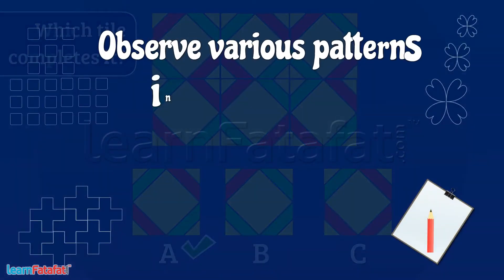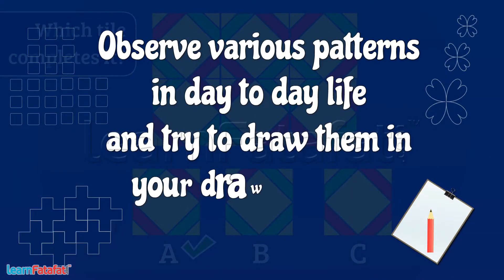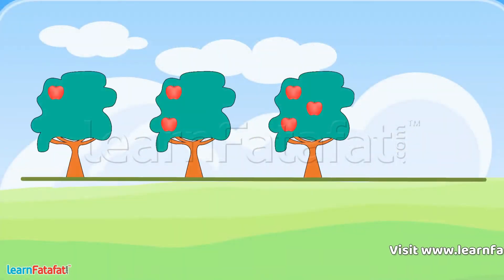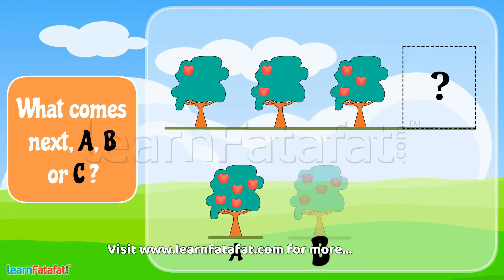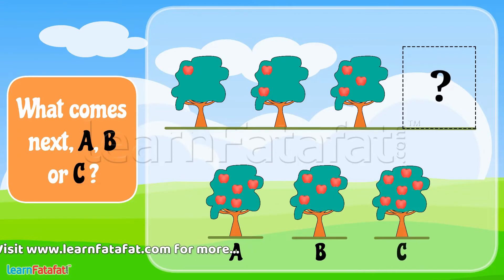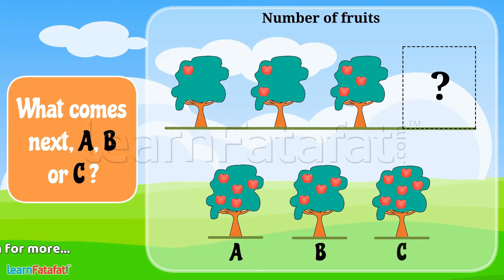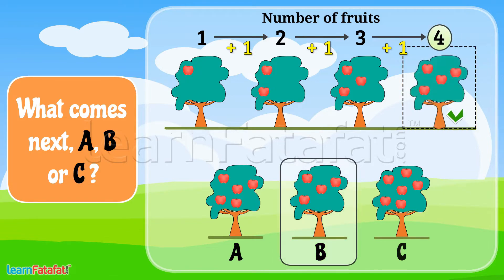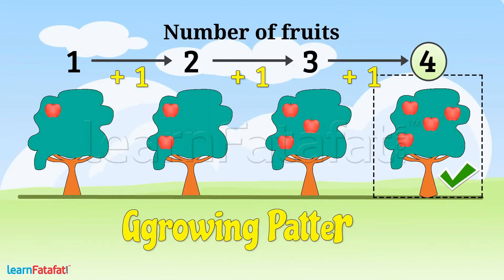Observe various patterns in day-to-day life and try to draw them in your drawing book. Now, look at this pattern. What comes next? A, B or C? Look at the number of fruits. One, two, three. The number of fruits grows by one. So, what comes next? Four. Answer is B. Such patterns are growing patterns.